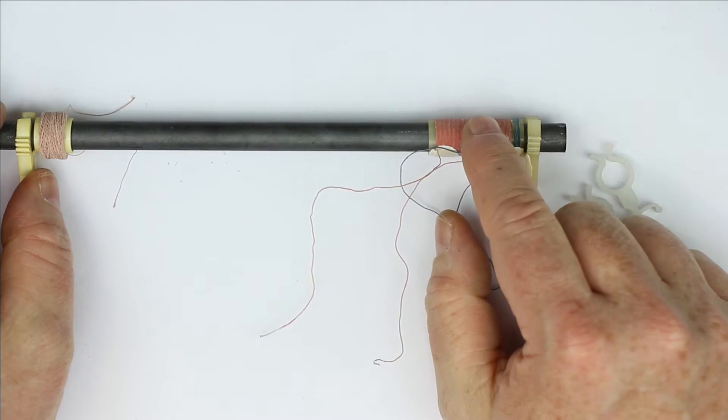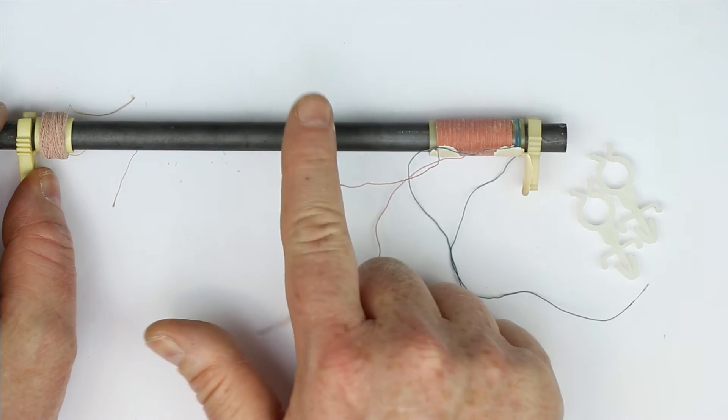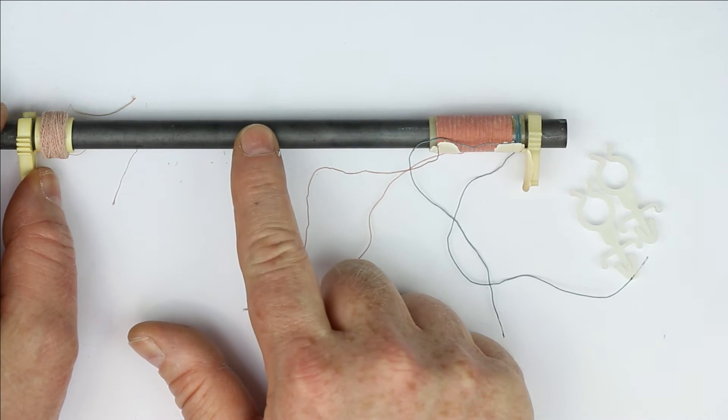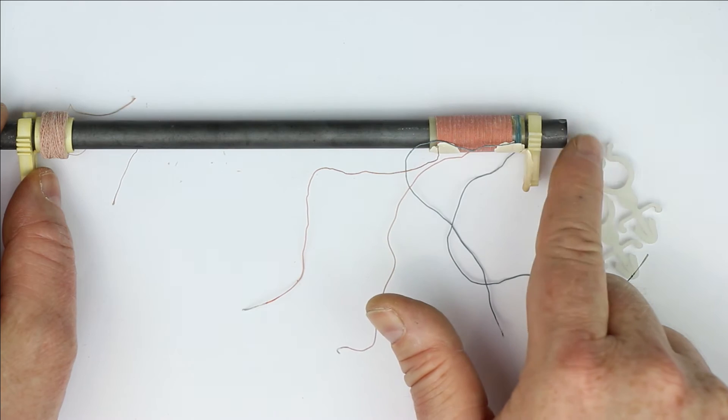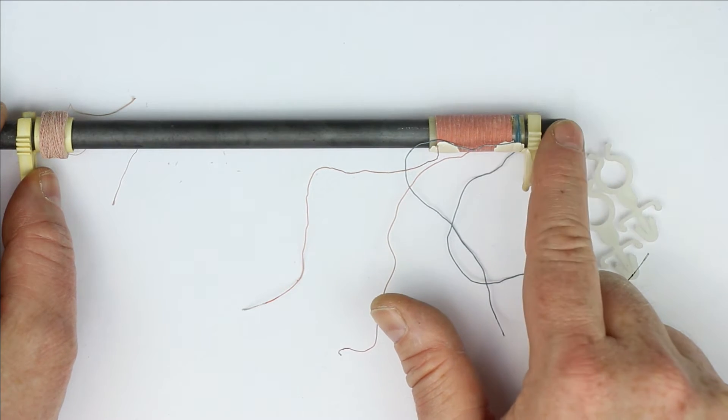The inductance becomes greatest when the coil is in the middle and it becomes smallest if it's here at the edge.